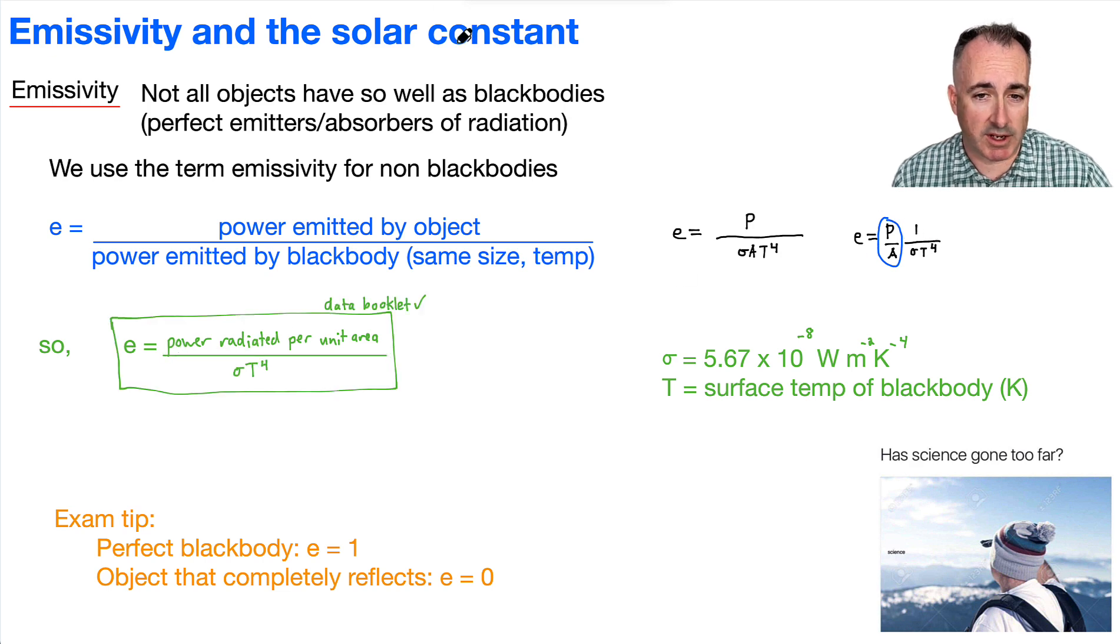Okay, and what does everything mean? Don't forget, we have sigma, which is the Stefan-Boltzmann constant. So that's 5.67 times 10 to the minus 8. We've got temperature of the black body. So that's, remember, because we're dividing it by a black body power. So that contains the surface temperature of that black body.